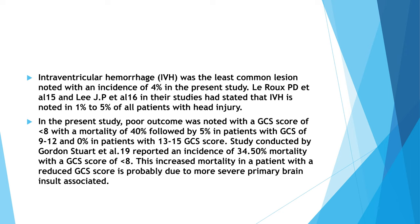Lee Rooks and Lee JP in their studies stated that IVH is noted in 1 to 5% of all patients with head injury. In the present study, poor outcome was noted with GCS score of less than 8, with a mortality of 40%, followed by 5% in patients with GCS of 9 to 12, and 0% in patients with GCS of 13 to 15. A study by Gordon Stewart reported an incidence of 34.5% mortality with a GCS score of less than 8. This increased mortality in patients with reduced GCS score is probably due to more severe primary brain insult.